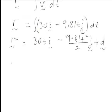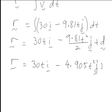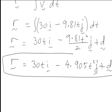Hence that gives us r is equal to 30ti minus 4.905 t squared j plus constant vector d. Once again we want to find out what our constant vector d is, so therefore again initial conditions can help us out.